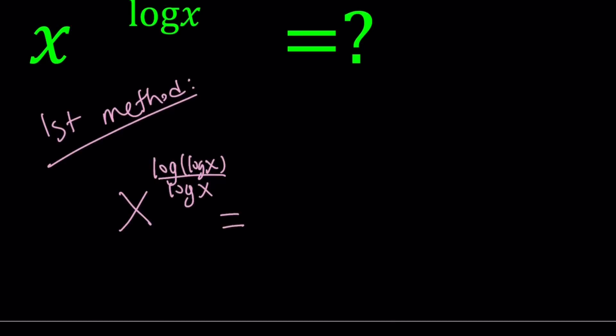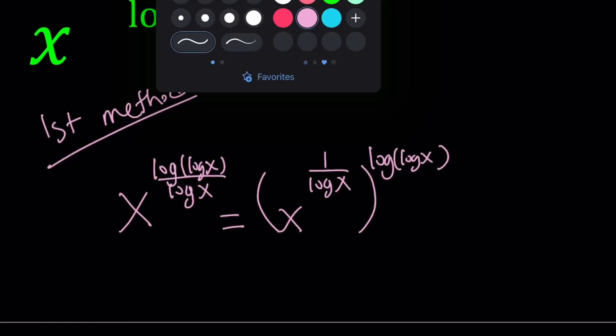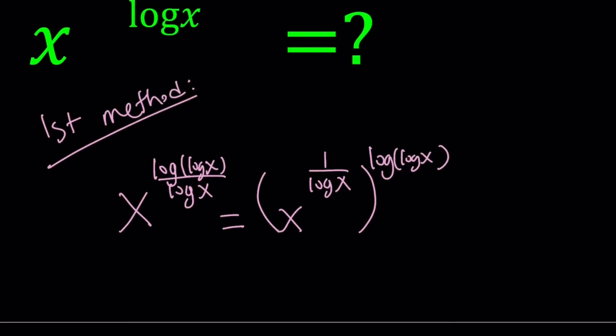And I'm going to write it as x to the power 1 over log x, to the power log of log x. So I kind of separated the numerator and the denominator because they're being multiplied, and one of them is the reciprocal. So why did I do that? Why did I leave the 1 over log x inside? Because that expression, if you've seen the previous videos, this expression should be familiar to you.